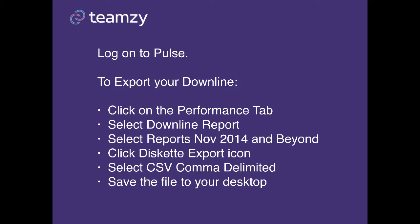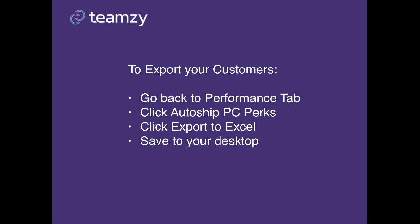Now select CSV comma delimited and save the file to your desktop. Now we're going to go back and get our customers. The way to do this is you're going to go back to the performance tab.